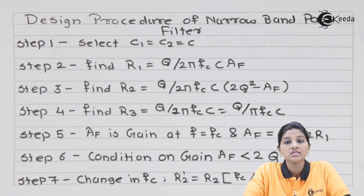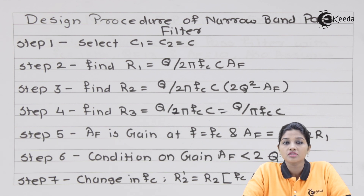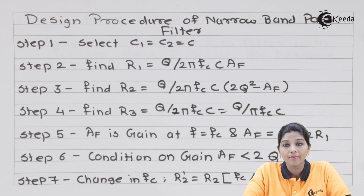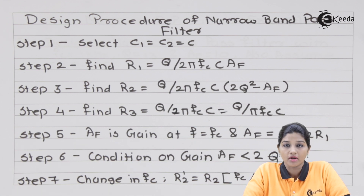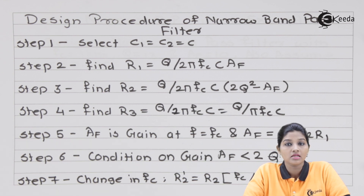To differentiate between pass band and stop band, a frequency called center frequency is defined, which acts as a boundary between them. In case of filters like low pass and high pass filter, there is only one cutoff frequency. But in case of a band pass filter, two frequencies are required — a lower frequency and a higher frequency — since the band pass filter allows only a particular band and rejects all other frequencies. There is one pass band and two stop bands.